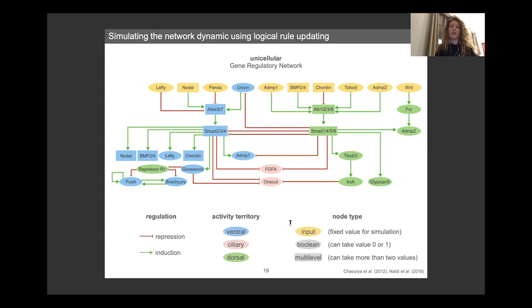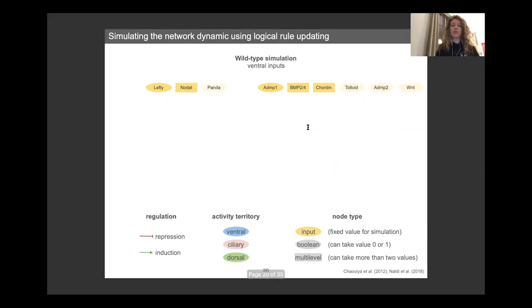And most of the nodes have Boolean values, so either being active with the value of 1 or inactive with the value of 0. But to take into account some concentration gradient events, some of the nodes can take more than two values, for example, the ALK receptors and the SMAD proteins. So to simulate the model, we just need to fix the input values to a set of values that correspond to each of the territories. So for example, here,